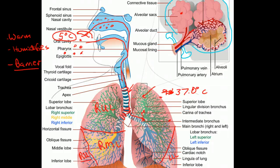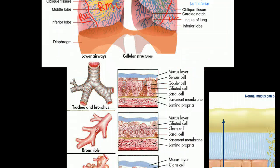We have the right upper lobe, right middle lobe, right lower lobe, left upper lobe, and the left lower lobe. And these are all divided by fissures.